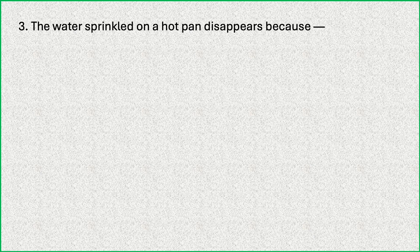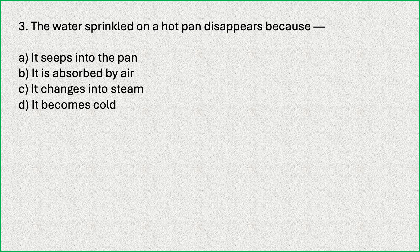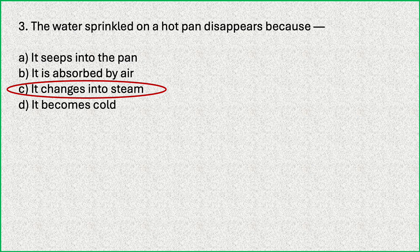The water sprinkled on a hot pan disappears because — options are: it seeps into the pan; it is absorbed by air; it changes into steam; it becomes cold. Which is the correct answer? It changes into steam. The water which is sprinkled on the hot pan gets converted into steam. Steam is actually water vapour.